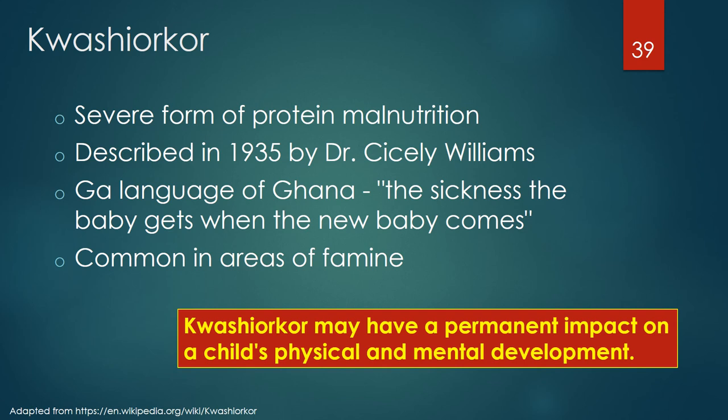Kwashiorkor is a form of severe protein malnutrition, described by Jamaican pediatrician Dr. Cicely Williams in 1935. The term is derived from the Ga language of Ghana and translates as 'the sickness the baby gets when the new baby comes.' Kwashiorkor can develop when older children are weaned from protein-rich breast milk and placed on diets high in carbohydrates like corn and low in protein. Though kwashiorkor can often be successfully treated, it may have a permanent impact on a child's physical and mental development.